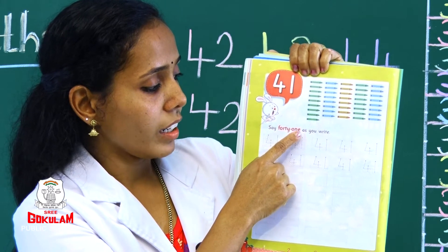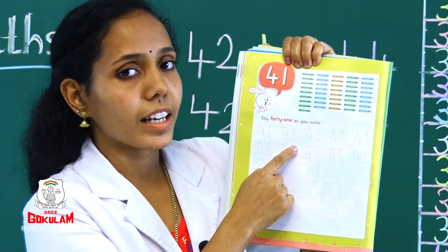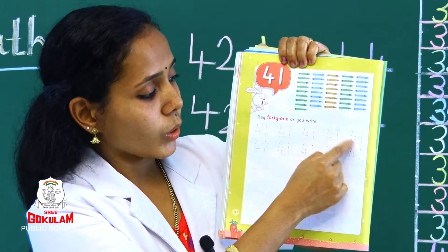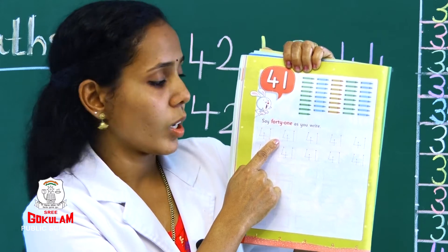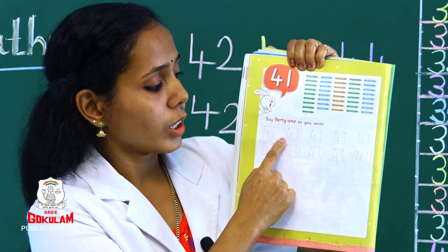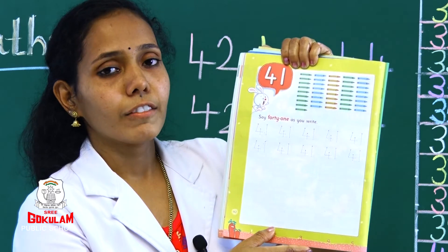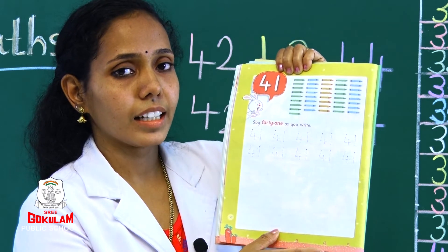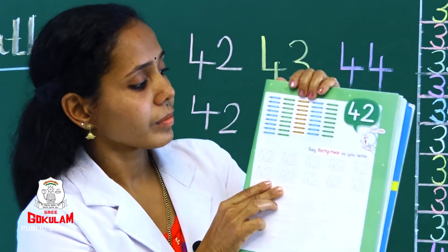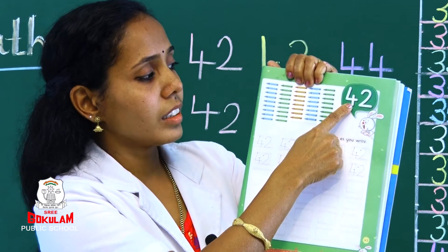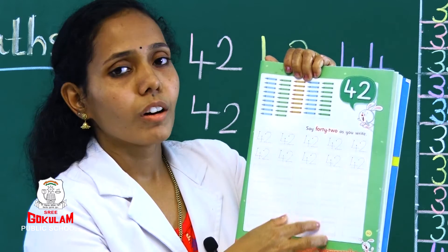Say 41 as you write. 41 — write the number 41. Is it clear? Next number 42: 4, 2, 42.